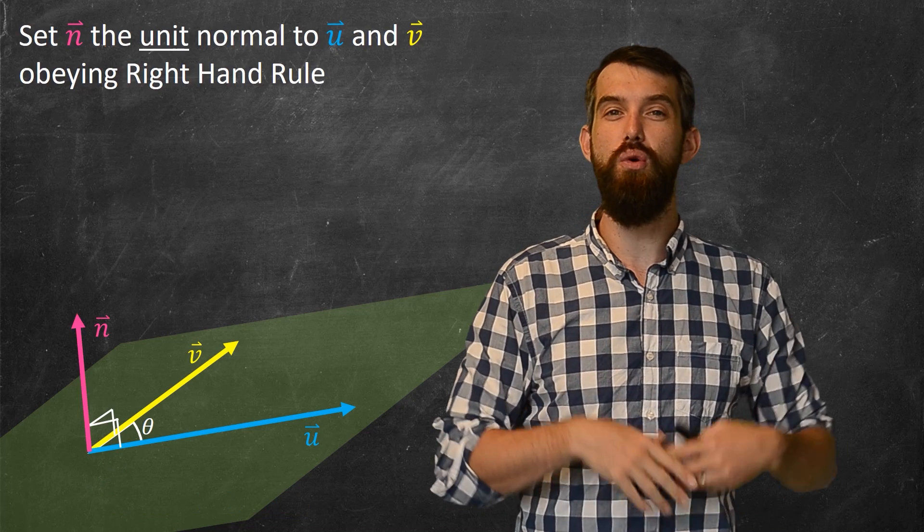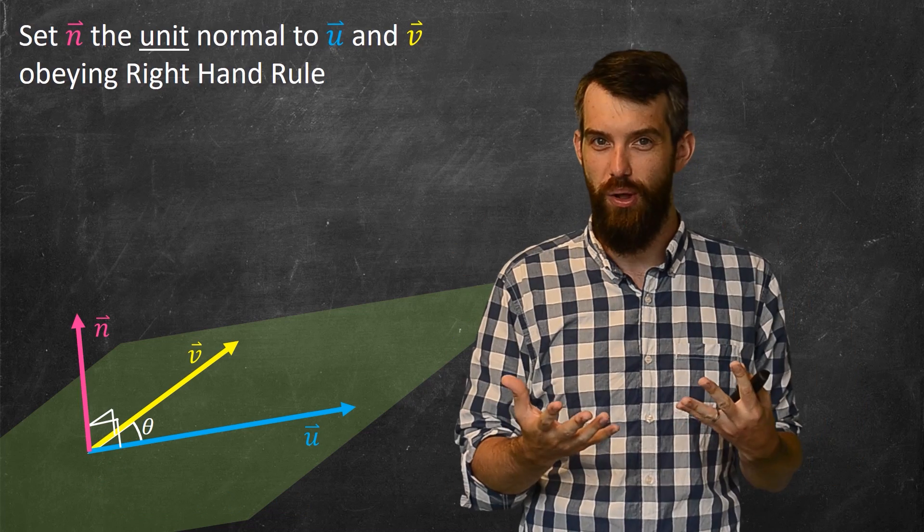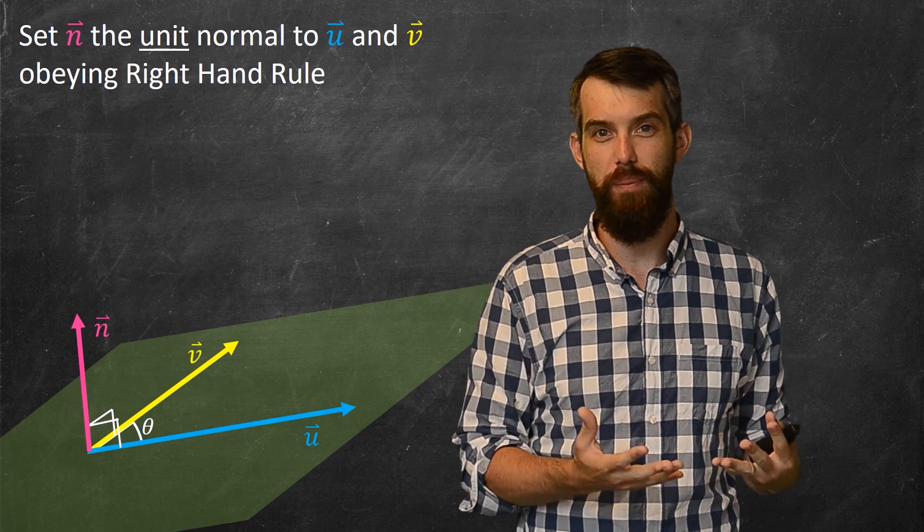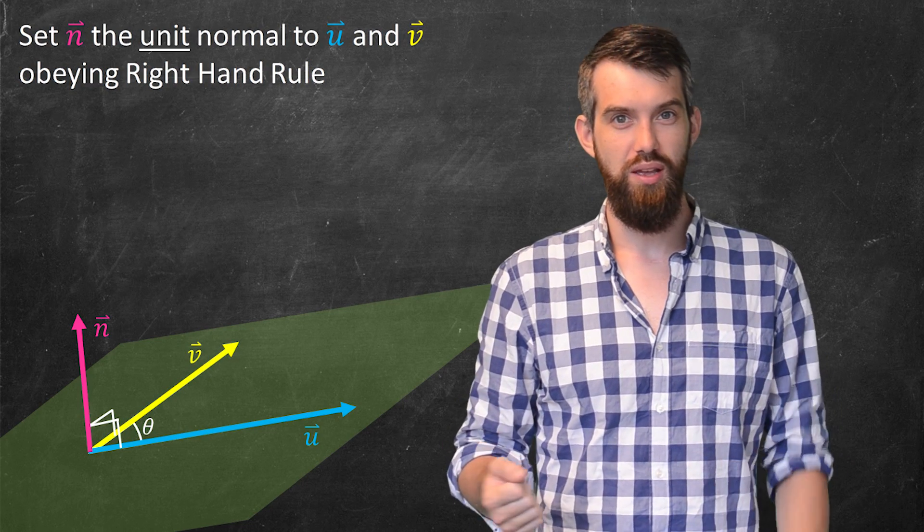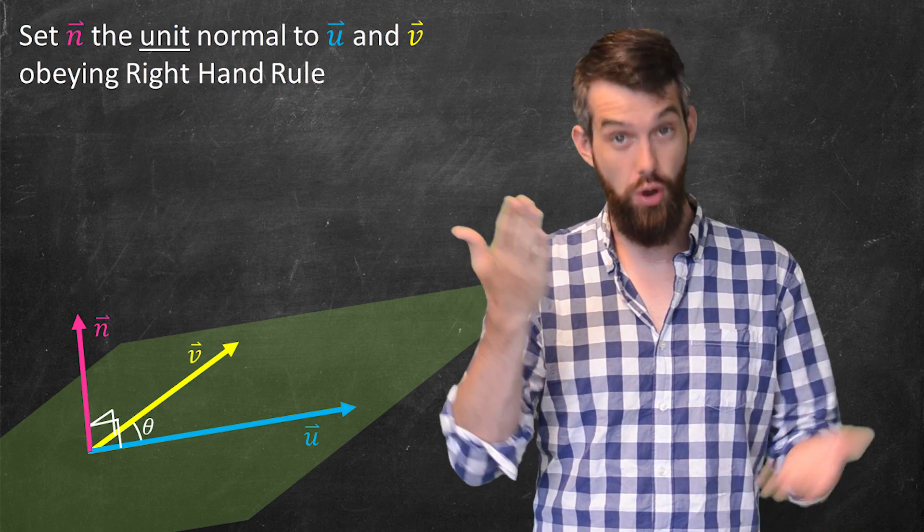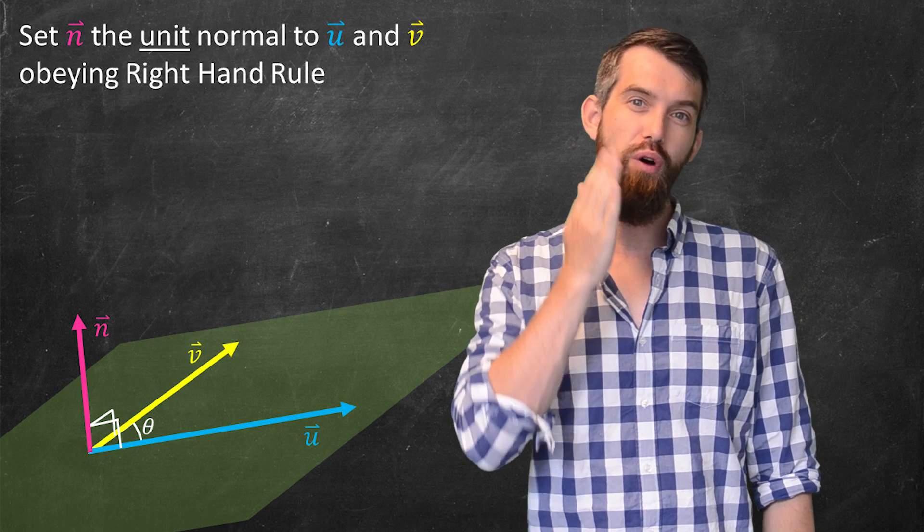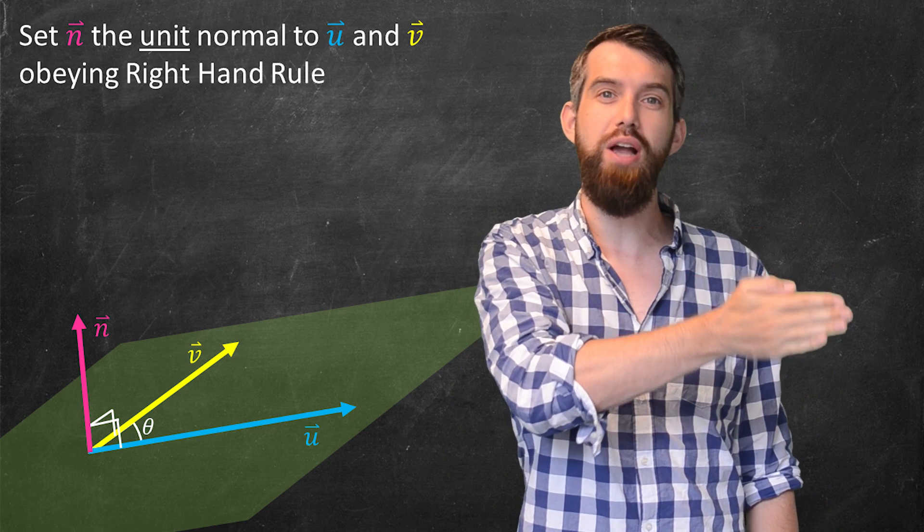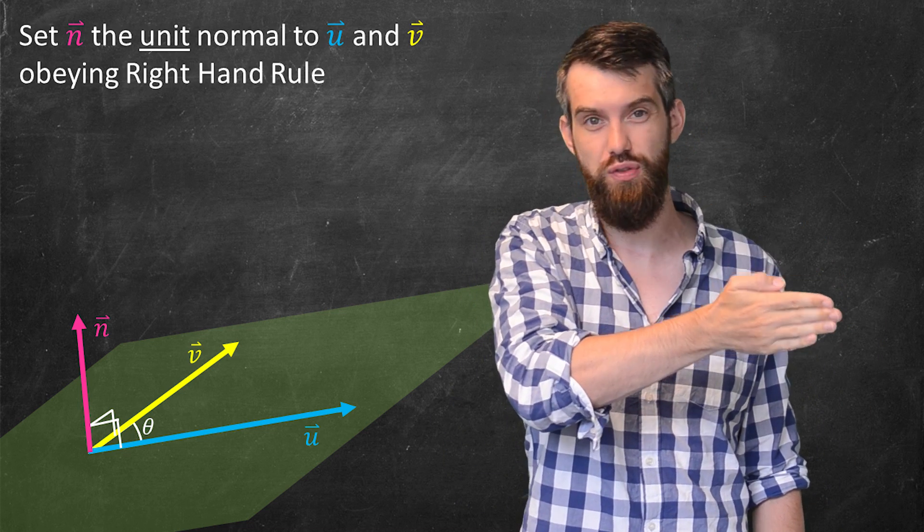I'm going to choose the so-called unit normal that obeys the right-hand rule. The way the right-hand rule works is this: You take your right hand, because that's called the right-hand rule, and first of all you point it along the direction of the u vector, the first vector that you're considering.